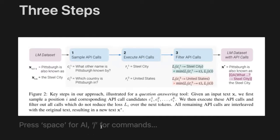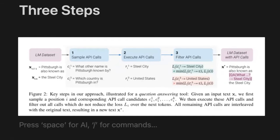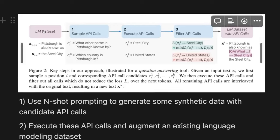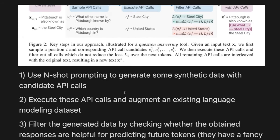They generate the training data in three steps. The first step: they take an existing language modeling dataset — just a bunch of passages of text — and use a clever prompt to figure out what API calls would help complete each sentence. For example, with 'Pittsburgh is known as the steel city,' if the model starts generating 'Pittsburgh is known as,' they try to inject an API call right there so it can complete 'the steel city.' That's step one.